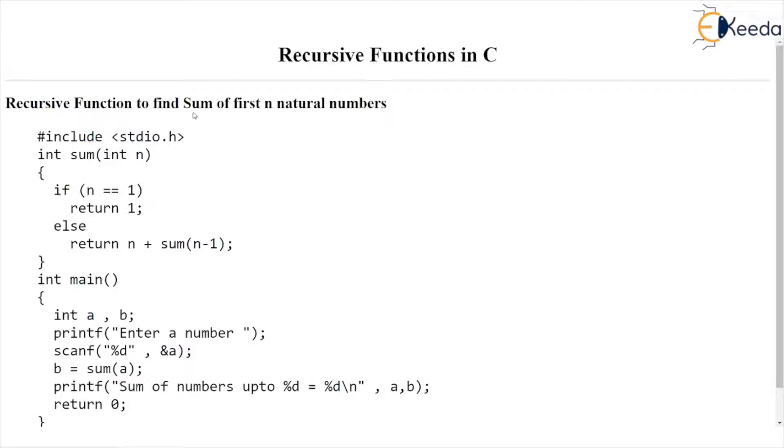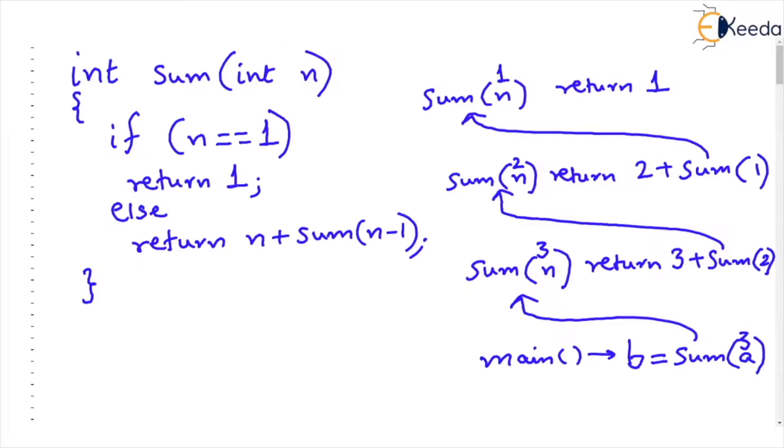Now very quick way of seeing this function in action is I have written the function again. This function sum has been called from main by passing the parameter n as 3. Check the table here on the right hand side or rather the graph or the executions that has been shown on the right hand side.